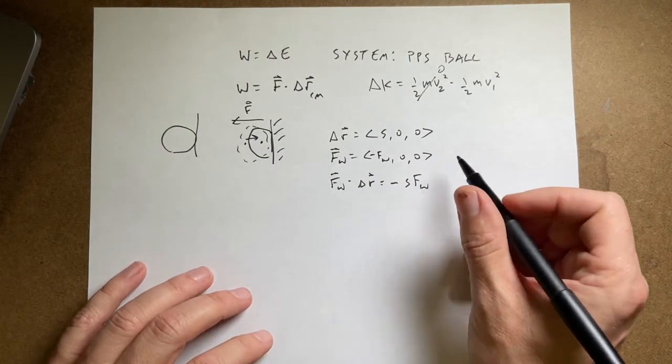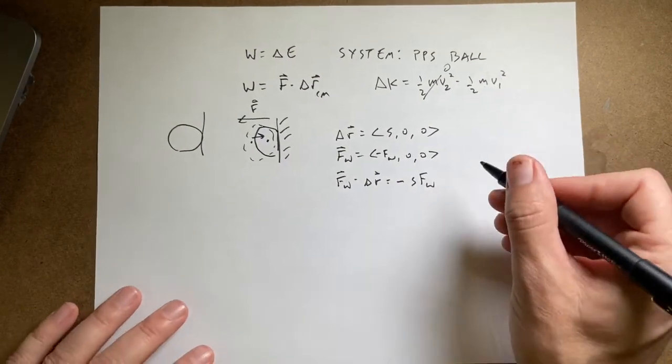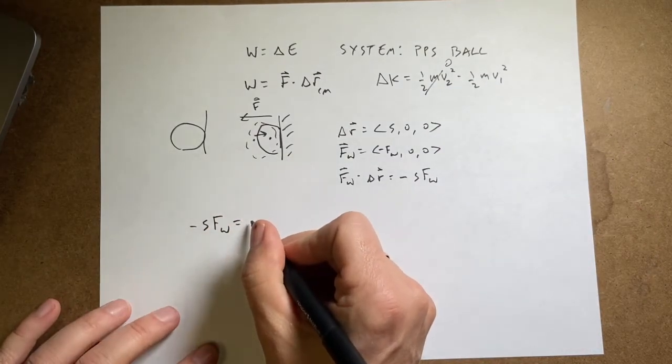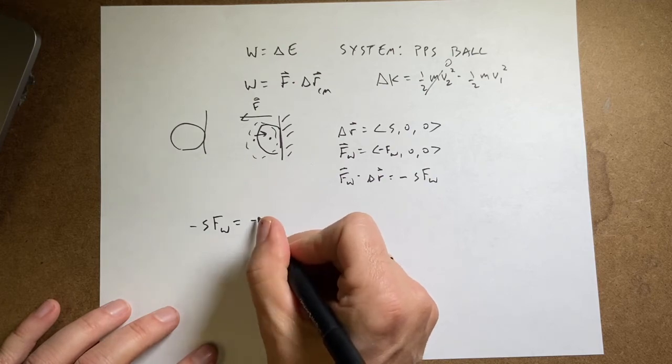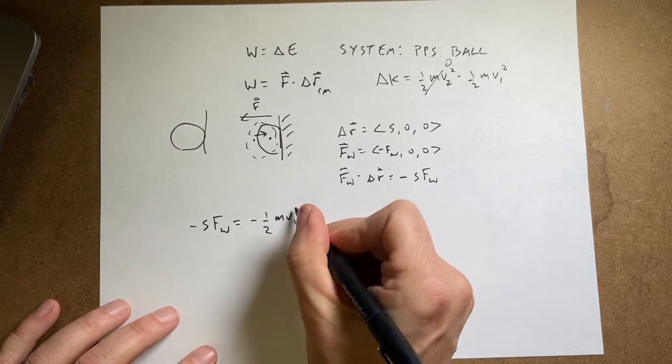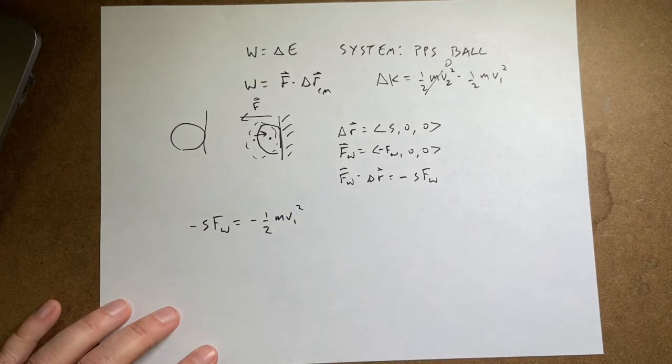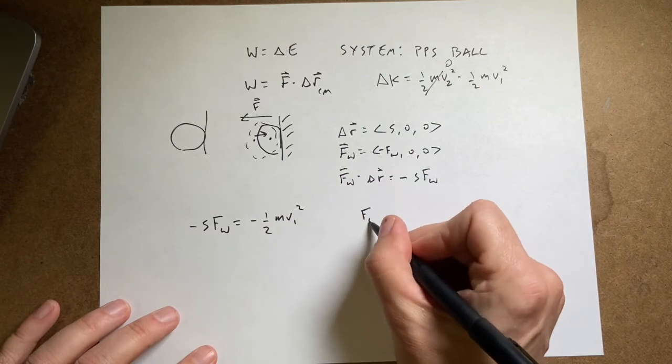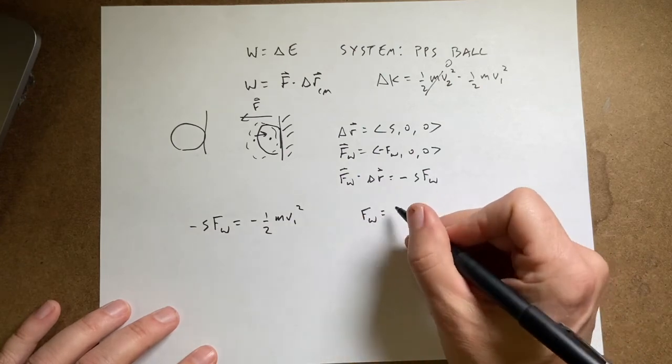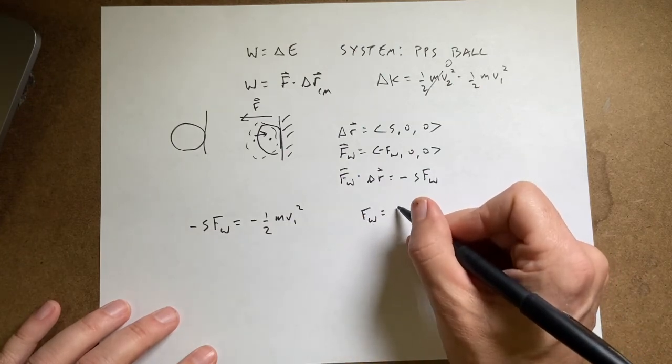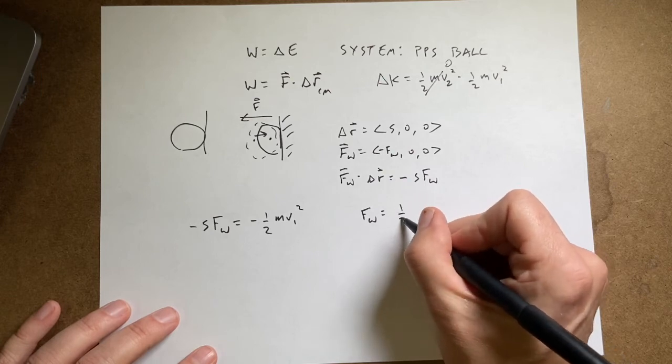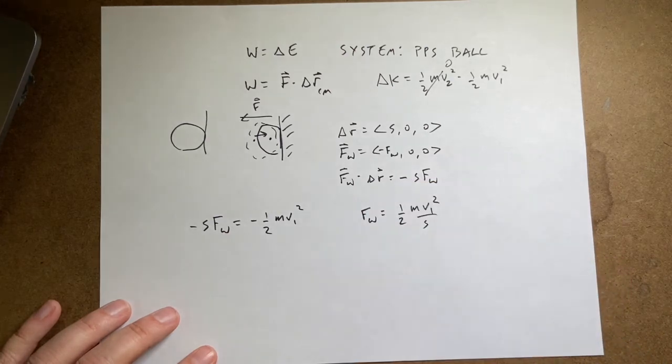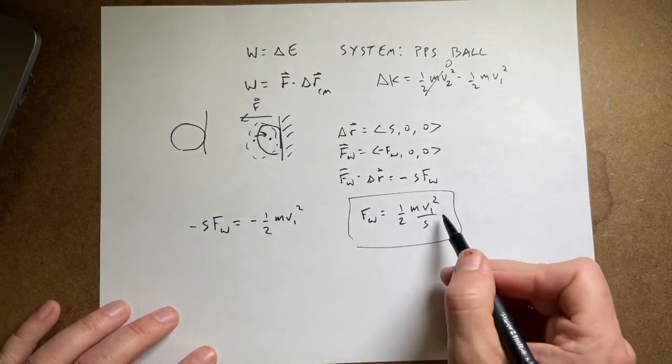So that's my work done. It's going to be equal to the change in kinetic energy. So I have negative s times f wall equals negative one half mv1 squared. And the negatives are going to cancel. Then I solve this for f wall. And I get one half mv1 squared over s, which is the same thing as I got before. That's the same expression. So now we just need to calculate that.